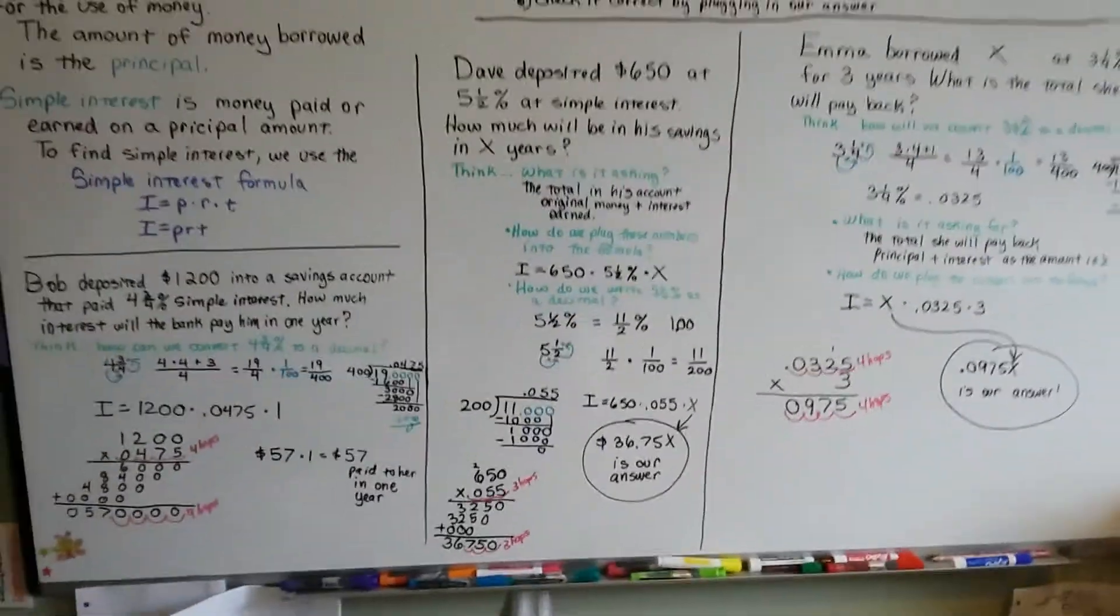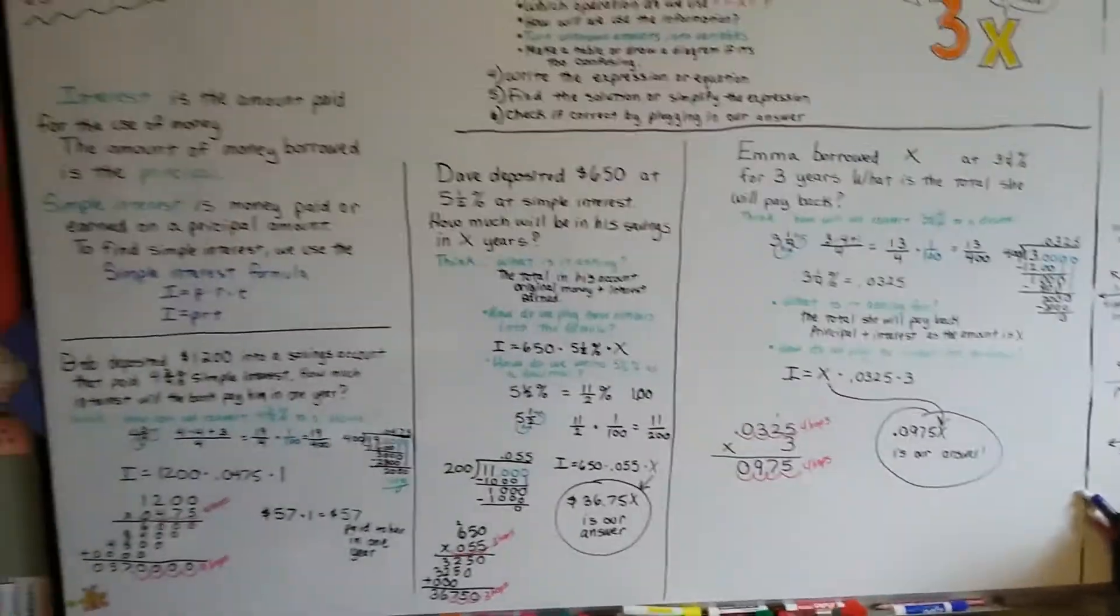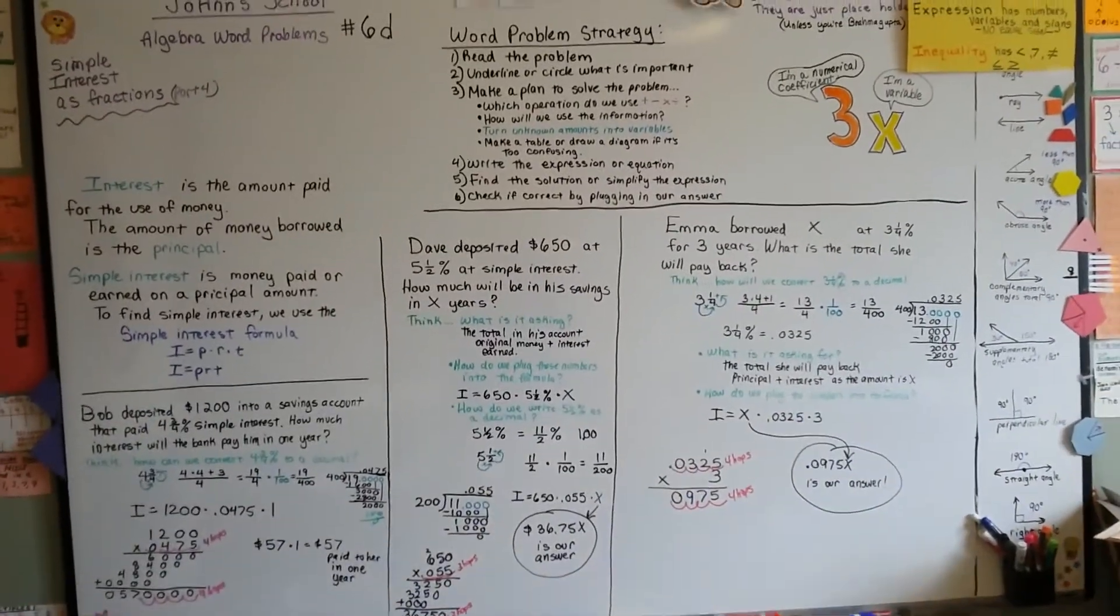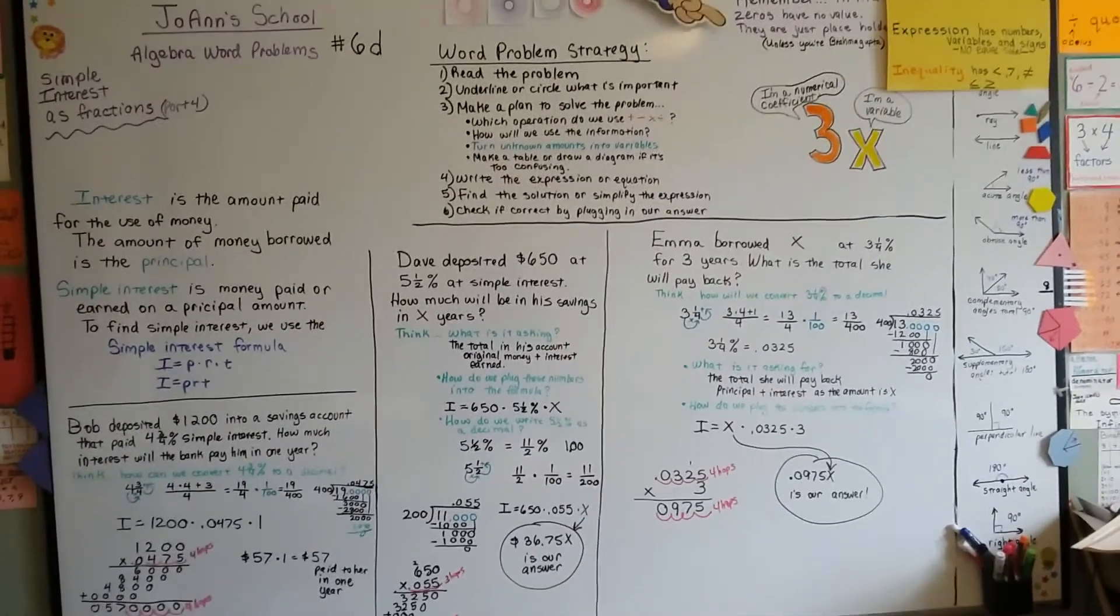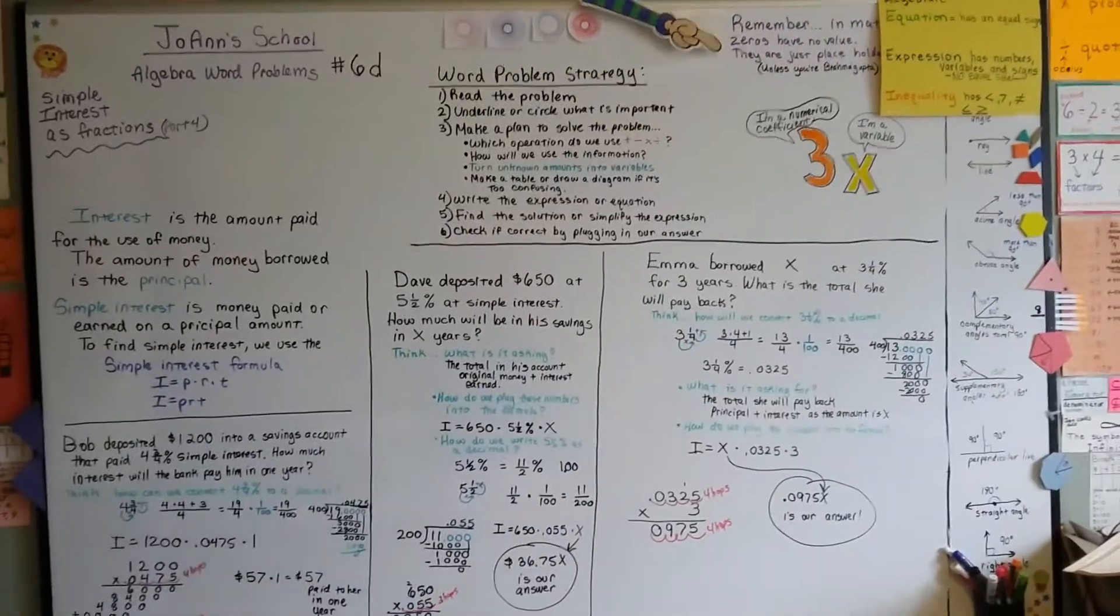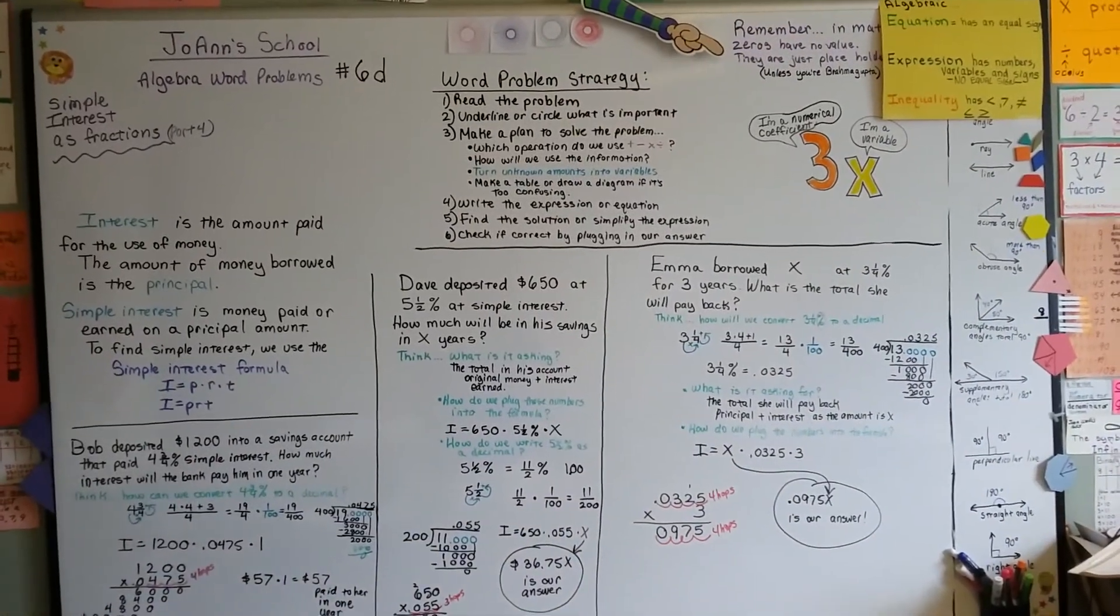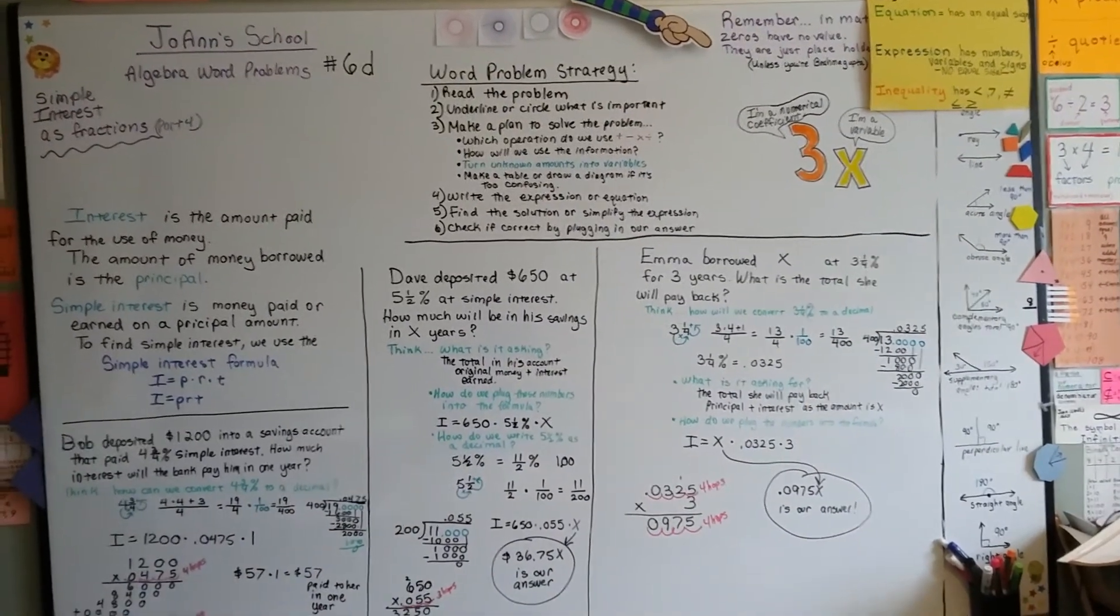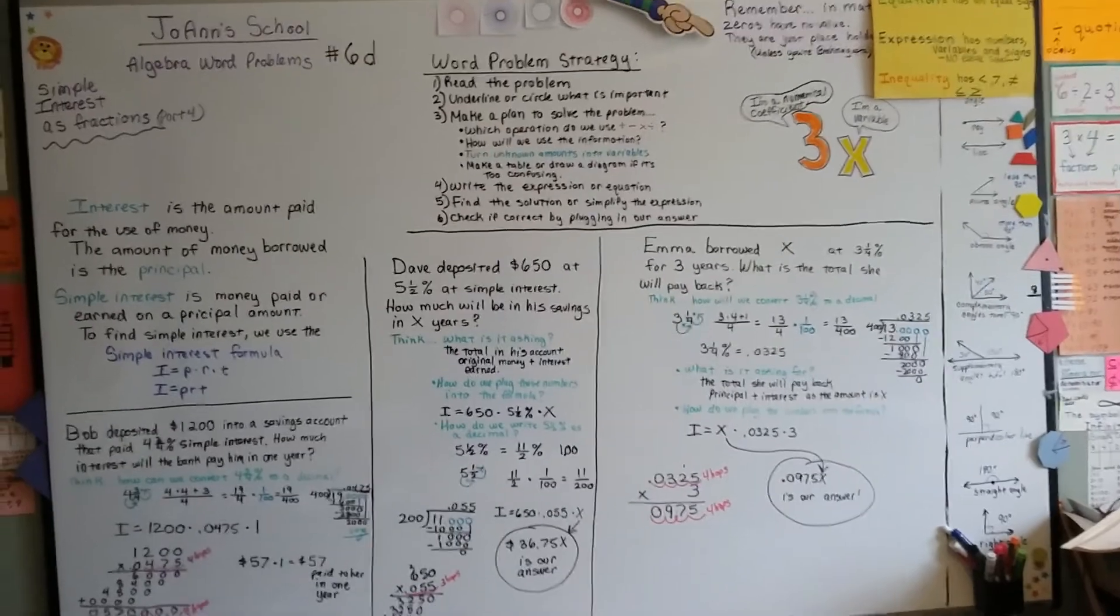Not that bad, was it? So now you know how to stick a variable in for an interest formula. And you know how to change that sassy fractional percentage into a decimal place. Just remember there's three parts: improper fraction multiplied by 1 over 100 and then divide it. I'll see you next video. Bye.